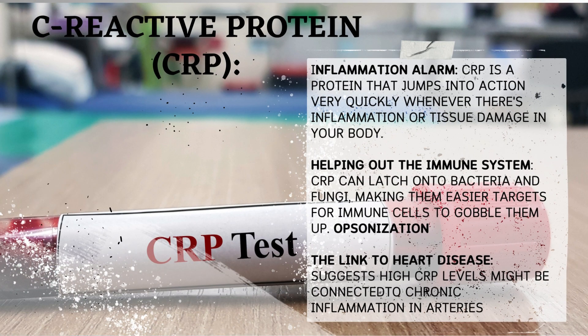C-reactive protein (CRP) — the body's early warning system for trouble. CRP is a protein that jumps into action very quickly whenever there's inflammation or tissue damage in your body, regardless of the cause — infection, injury, you name it. CRP is one of the first responders. CRP can latch onto bacteria and fungi, making them easier targets for immune cells to engulf — a process called opsonization, like putting a big 'eat me' sign on bad guys for your immune system.